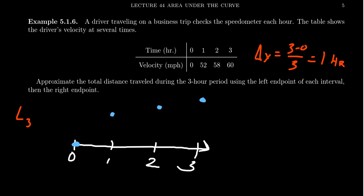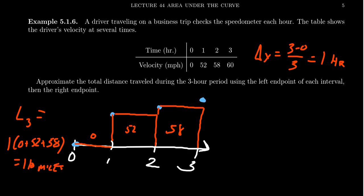So what we can do is we can use the left endpoints where you use zero for the first interval, you're going to use 52 for the second one, and then you're going to use 58 for the third one. So you're going to get 52 times one, 58 times one, and zero times one. And so L3 here, you're going to get one times zero plus 52 plus 58, so that'll add up to be 110 miles.